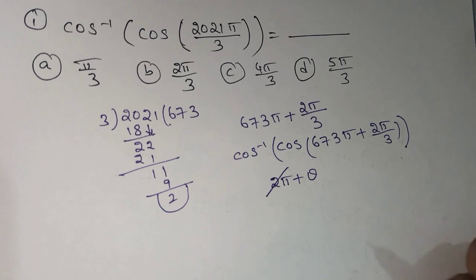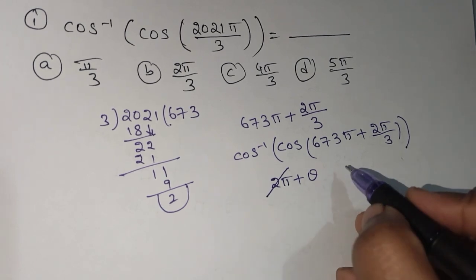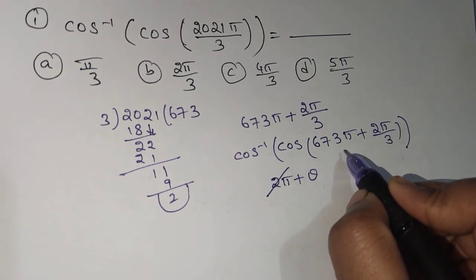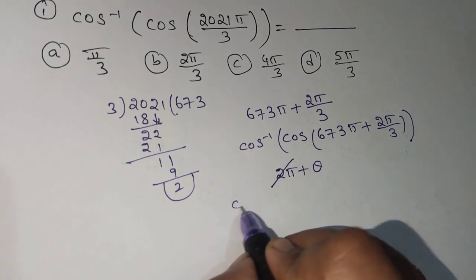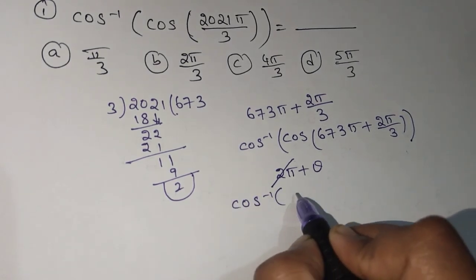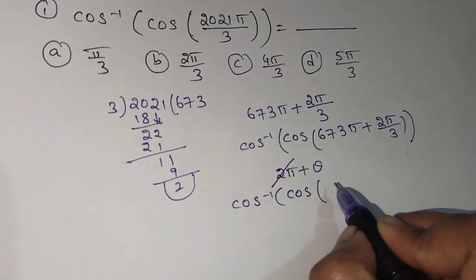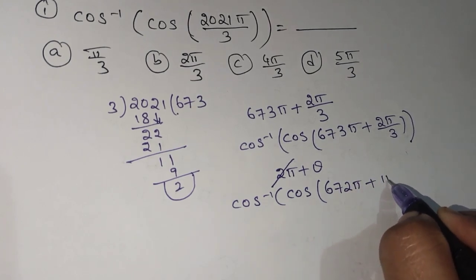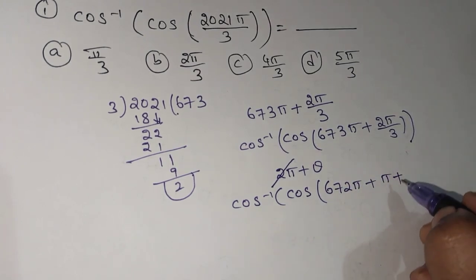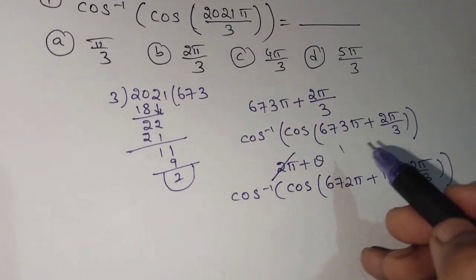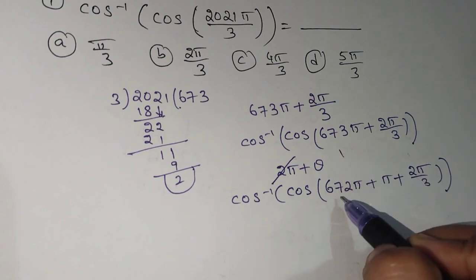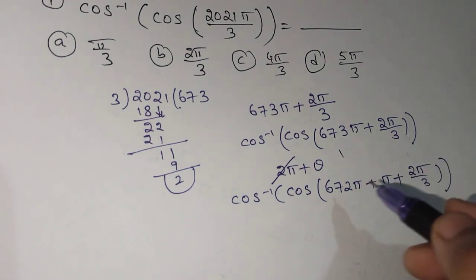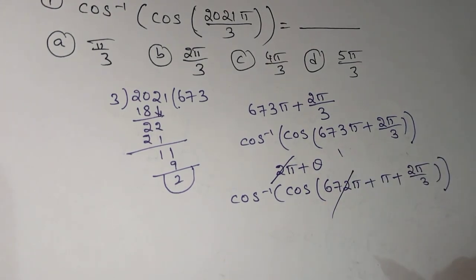But it is odd number. Now I want to write like even number. I will split like cos inverse of cos of 672π plus the remaining π, plus 2π/3. So I expanded the 673 as 672 plus 1. Now it is even number, I deleted this.